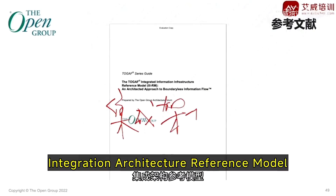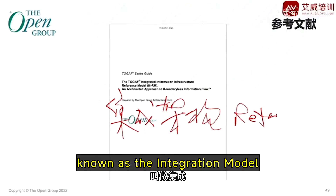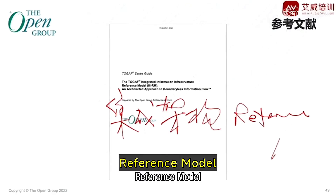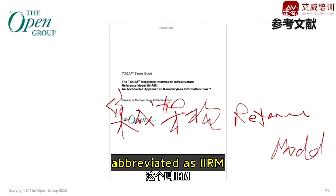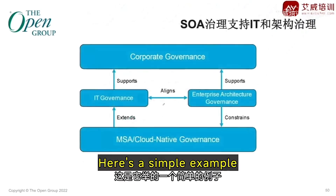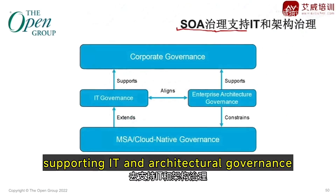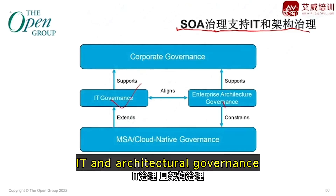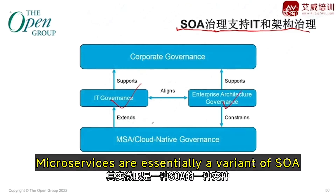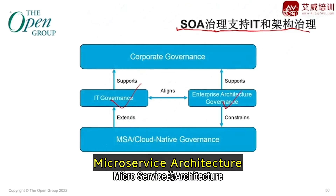The Integration Architecture Reference Model, abbreviated as IRM, is a simple example of supporting IT and architectural governance. Microservices are essentially a variant of service-oriented architecture.